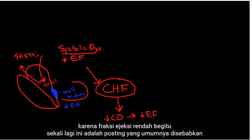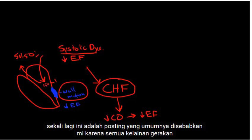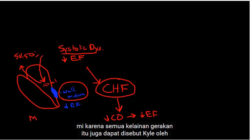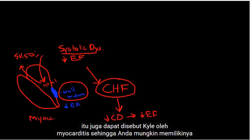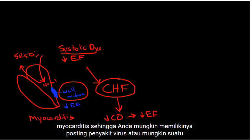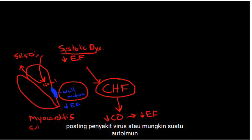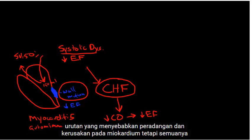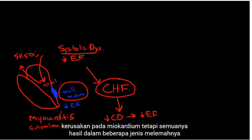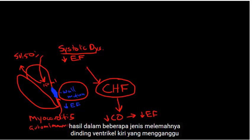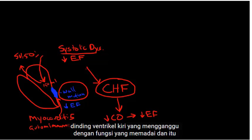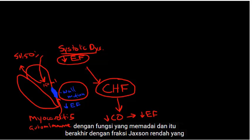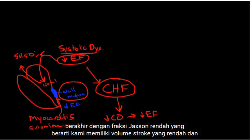Systolic dysfunction is commonly caused post-MI because of wall motion abnormalities. It may also be caused by myocarditis — either a post-viral illness or an autoimmune disorder that causes inflammation and damage to the myocardium. All of this results in weakening of the left ventricular wall, which interferes with adequate functioning, resulting in a low ejection fraction and therefore a low stroke volume.